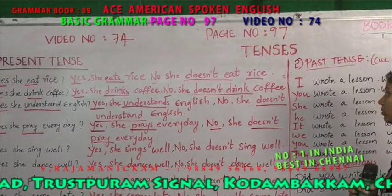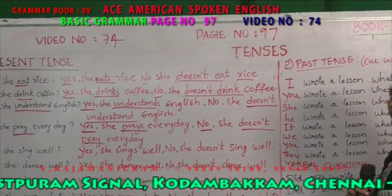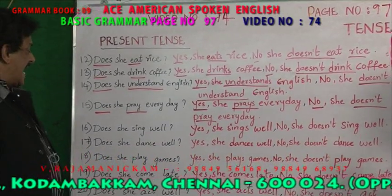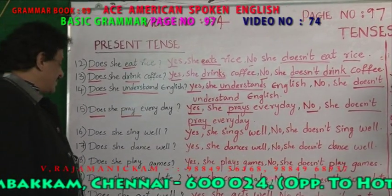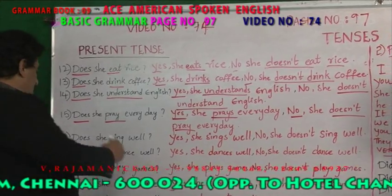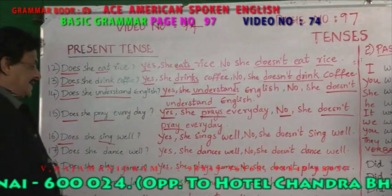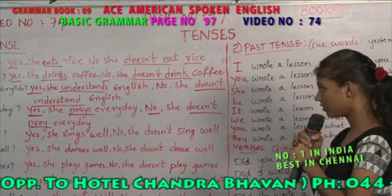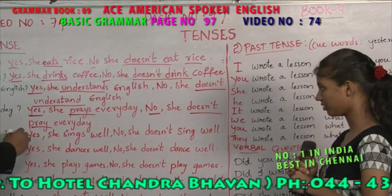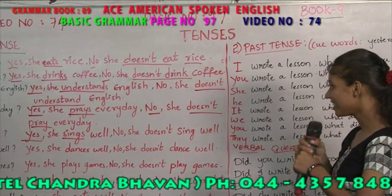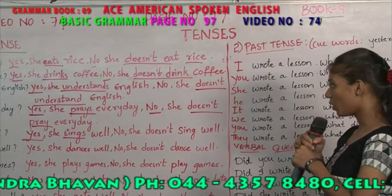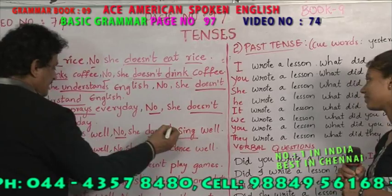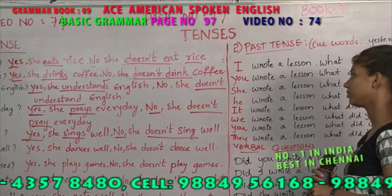In the negative, you are replying in negative present tense. Sixteenth question: does she sing well? Does and sing are the present tense forms. The answer: yes, she sings well. No, she doesn't sing well. Both are in present tense — doesn't and sing.